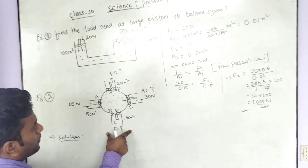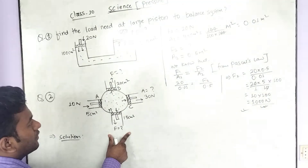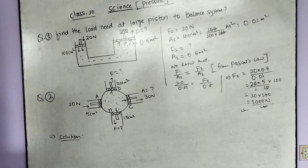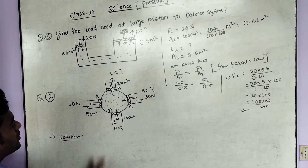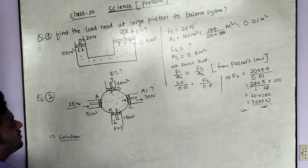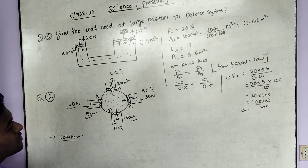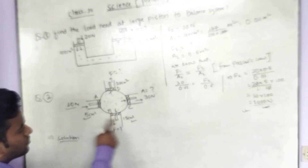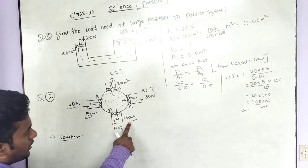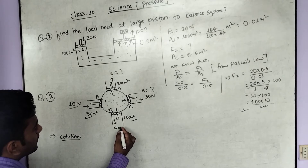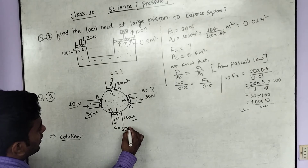The pressure at piston A is equally transmitted, so pressure at A equals pressure at piston B. The area of piston B is 15 cm² — that is 3 times the area of piston A which is 5 cm². Since the area is 3 times larger, the force at piston B must also be 3 times larger, giving 30 Newton.